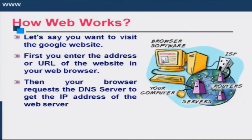In the World Wide Web, we have a server called the web server, which hosts the information. On the client computers, we have a browser. Browsers like Mozilla or Chrome are client applications which access information from the web server. The application protocol used to access this information is called HTTP — hypertext transfer protocol. On the server side, there is a web server application; a very popular one is Apache. The client browser sends a request to the web server to get the information.